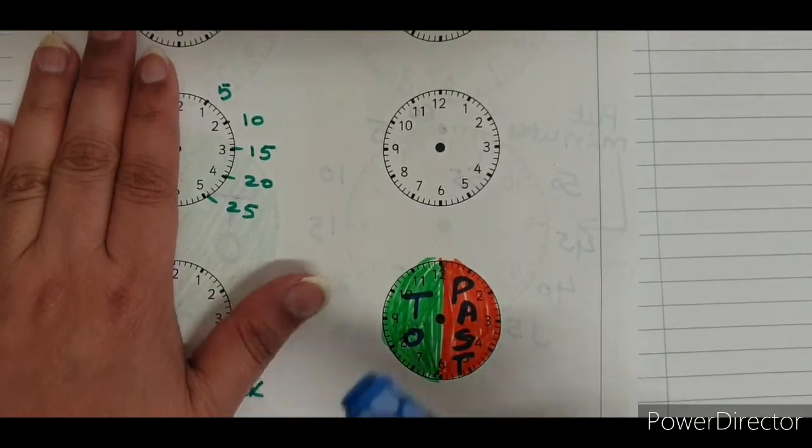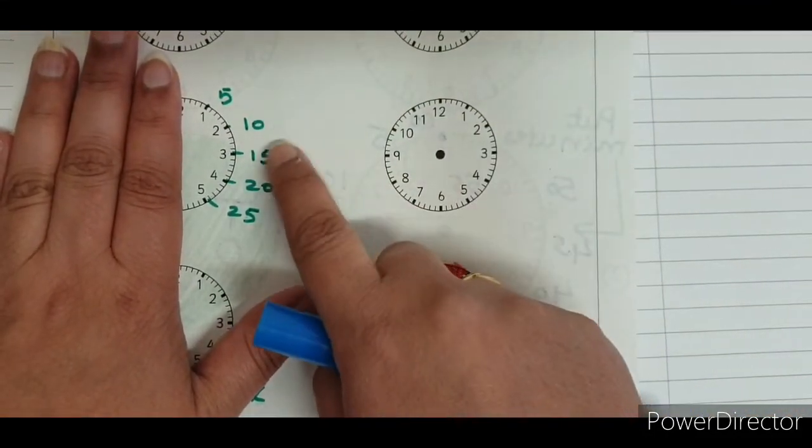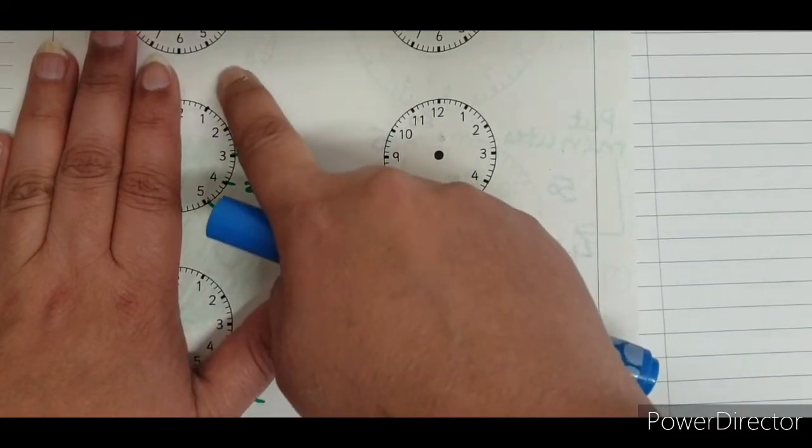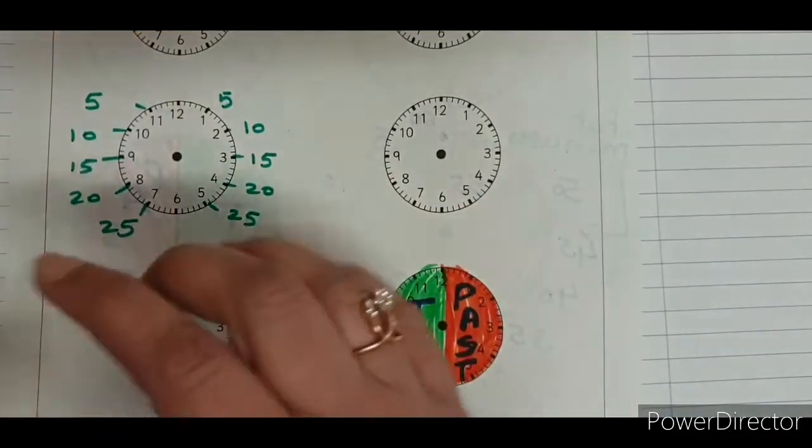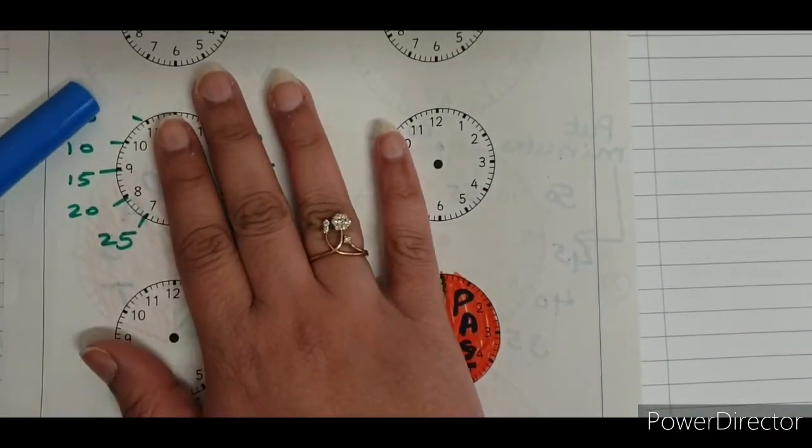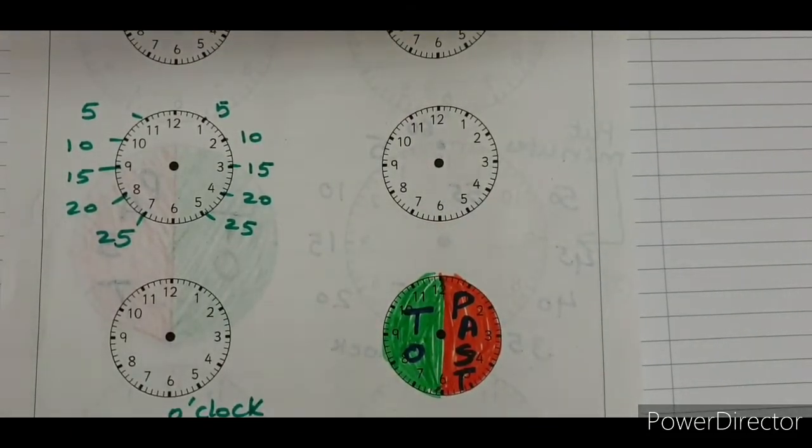I have put 5 times table 5, 10, 15, 20, 25. So, from 5 to 25 on this half and 5, 10, 15, 20, 25 on this half.